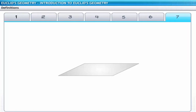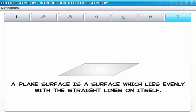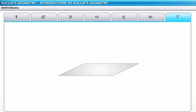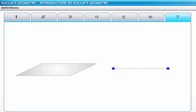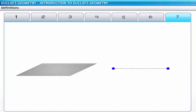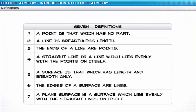So far we have seen what Euclid said about points and lines. Now let's see what he says about a surface. The seventh definition states that a plain surface is a surface which lies evenly with the straight lines on itself. Similar to how a line lies evenly with the points on it, a plain surface is formed by evenly spaced lines which are very close to each other. With these seven definitions, Euclid tried to describe the fundamental elements of geometry: a point has no dimension, a line has one dimension, and a surface has two dimensions.